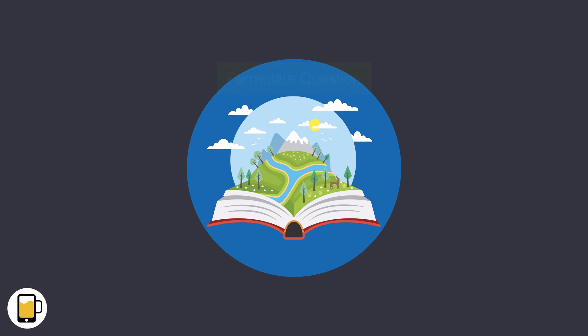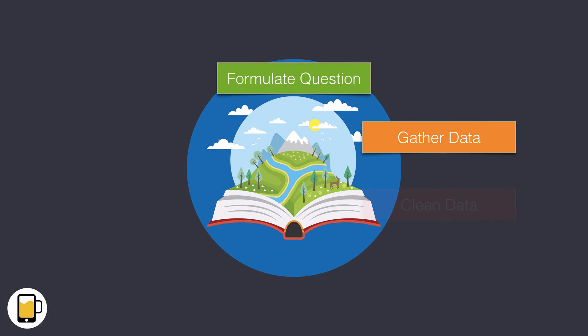Let's think about how a data scientist would approach this problem. First, a data scientist would carefully formulate the question they're looking to answer. A clear and well-formulated question will determine the research and will also affect the kind of data that you will go out and gather. In fact, step two is gathering the data that will help us answer the question.